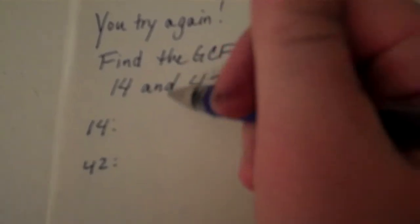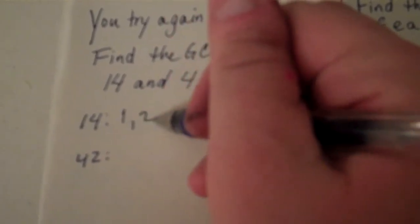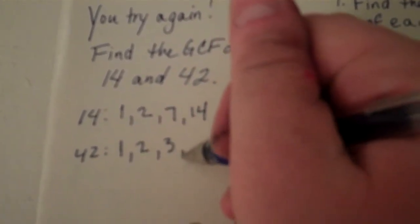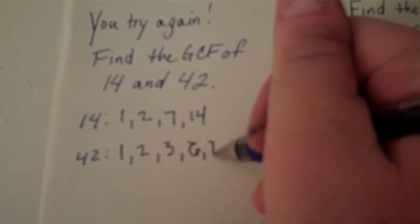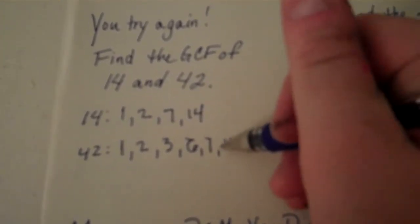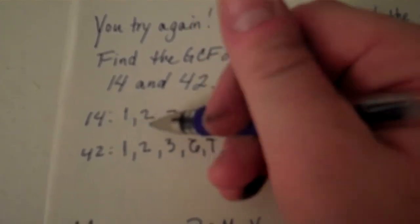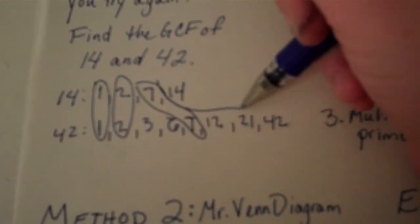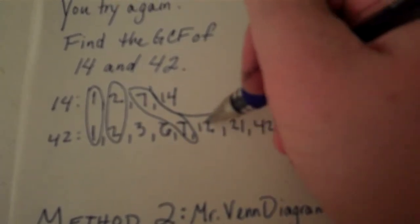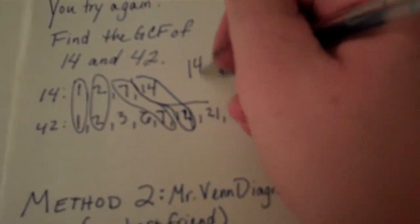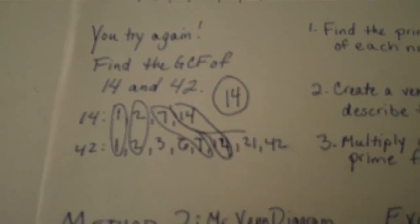Now that you've solved it, I'll show you my solution. The factors of fourteen are one, two, seven, and fourteen. The factors of forty-two are one, two, three, six, seven, twelve, twenty-one, and forty-two. I see a few shared factors: one, two, seven, and fourteen. So fourteen is the greatest common factor of fourteen and forty-two.